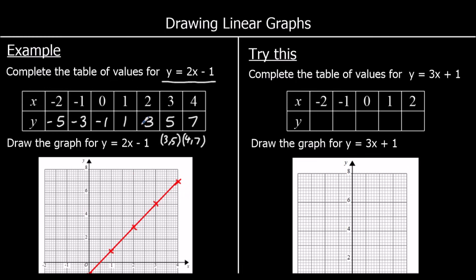One for you to try. Complete the table of values for y equals 3x plus 1, and if you're able to, also draw the graph. So the equation this time is y equals 3x plus 1. We're going to start by substituting in x equals 2: 3 times 2 is 6, plus 1 is 7. Then x equals 1: 3 ones are 3, plus 1 is 4. x equals 0: 3 zeros is nothing, plus 1 is 1. x equals negative 1: 3 negative 1s make negative 3, negative 3 plus 1 is negative 2. And x equals negative 2: 3 negative 2s make negative 6, plus 1 is negative 5. You'll see there's the same difference between each of the y values, and that will make it a straight line.